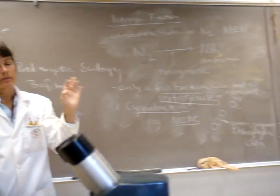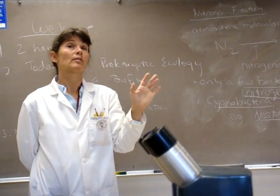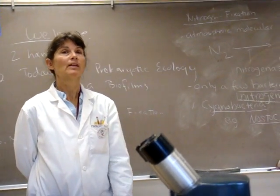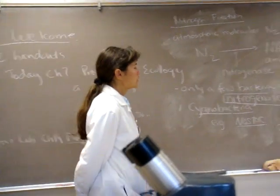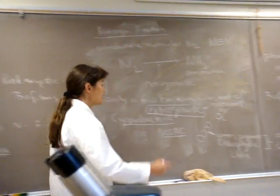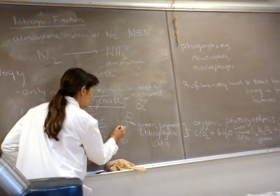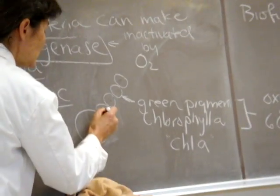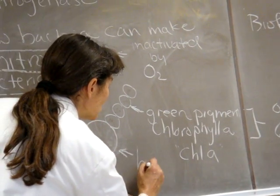So the different nitrogen fixing bacteria, they've developed different strategies to solve this problem. This is so cool. So what the cyanobacteria, the strategy they've taken is to make a special cell, a special larger cell called a heterocyte.